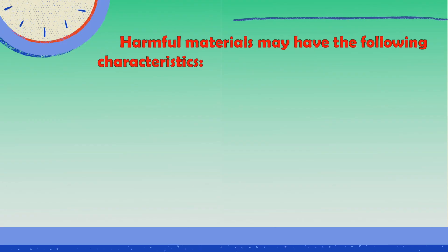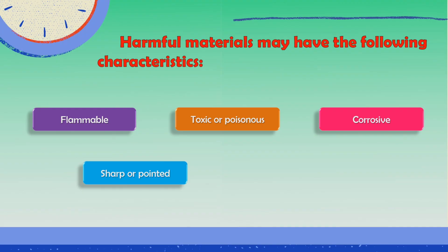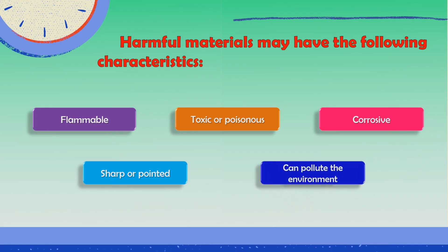Harmful materials may have the following characteristics. Flammable — they can catch fire easily. Toxic or poisonous — when absorbed or ingested, they can cause serious damage or even death. Corrosive — they can damage skin, eyes, or the respiratory tract. Sharp or pointed — they can cut skin or cause wounds and injuries. And they can pollute the environment when dumped straight into the landfill because of the chemicals they contain.